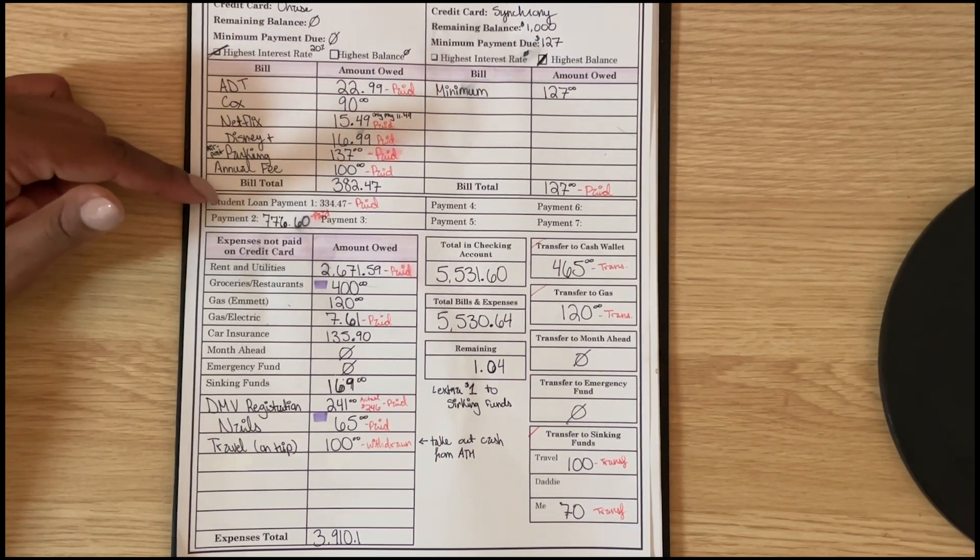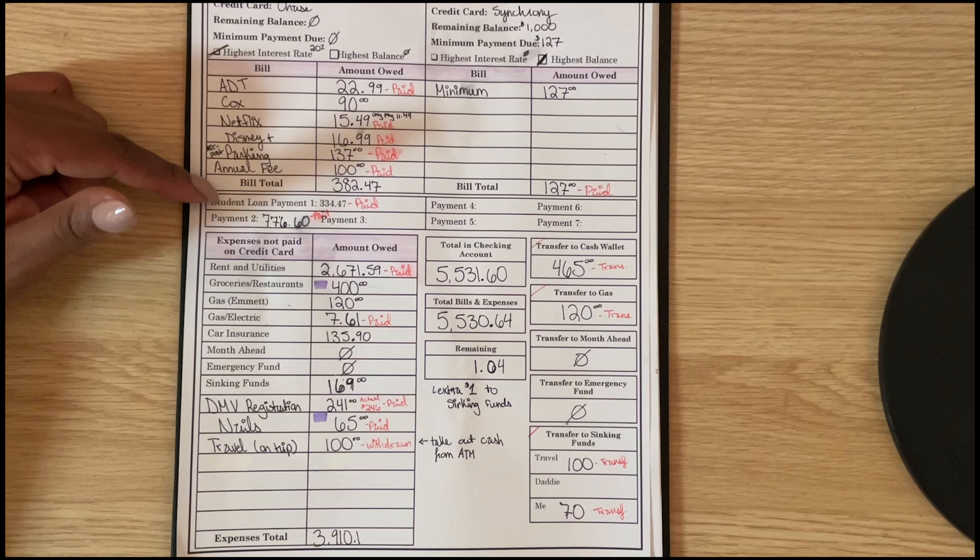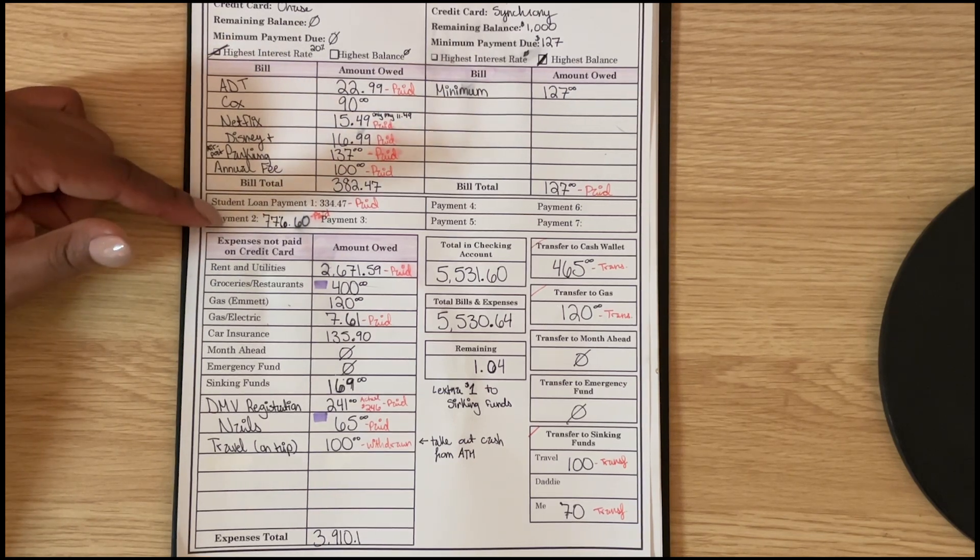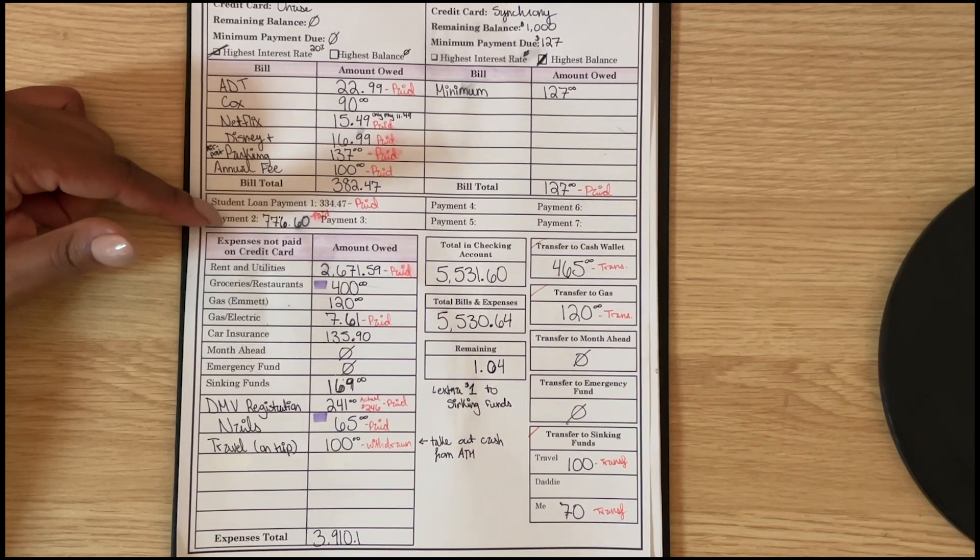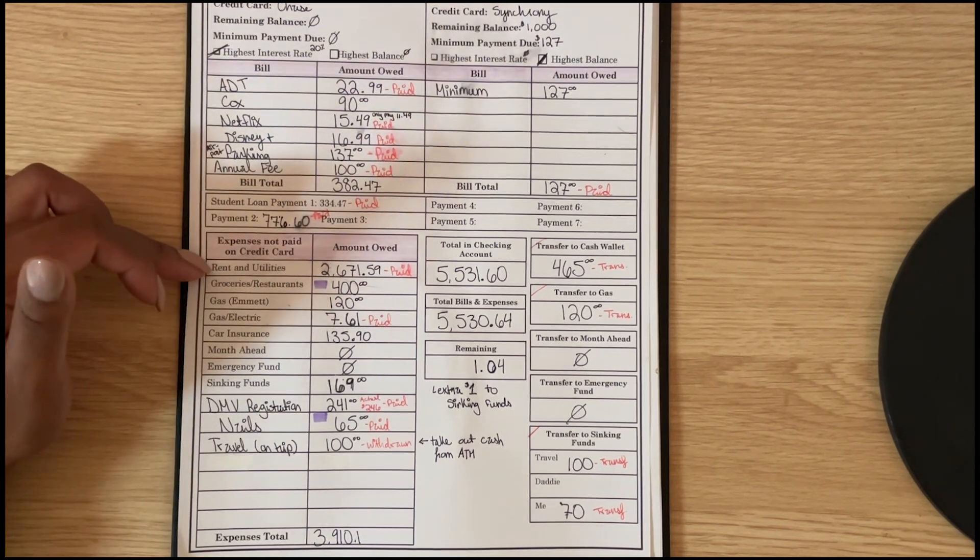My student loan payment - we are still in forbearance at 0% interest, so I am crushing this student loan. My minimum payment is $334.47 and I added an extra $776.60 to put it at I think like $1,111 and then there might be some change on there.